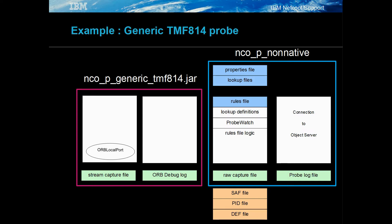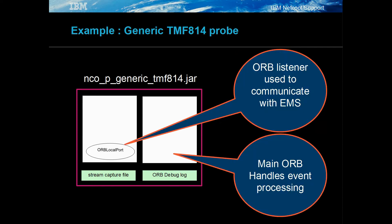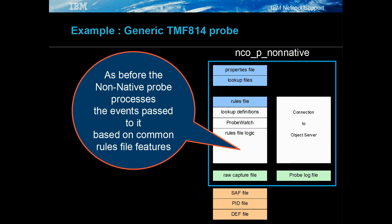Another example of a non-native probe is the generic TMF814 Korba probe. The Korba probes use a common set of Java APIs provided as supporting packages. As well as collecting data from the Korba's server, the probe starts a local service whose port can be defined using the ORB local port, which is required when connecting through firewalls. The non-native part of the probe manages the resynchronization and notification events, placing them on the probe's event queue ready for the non-native probe to process. The object server features are the same as the Tivoli EIF probe and other non-native probes, making it easier to configure and debug.